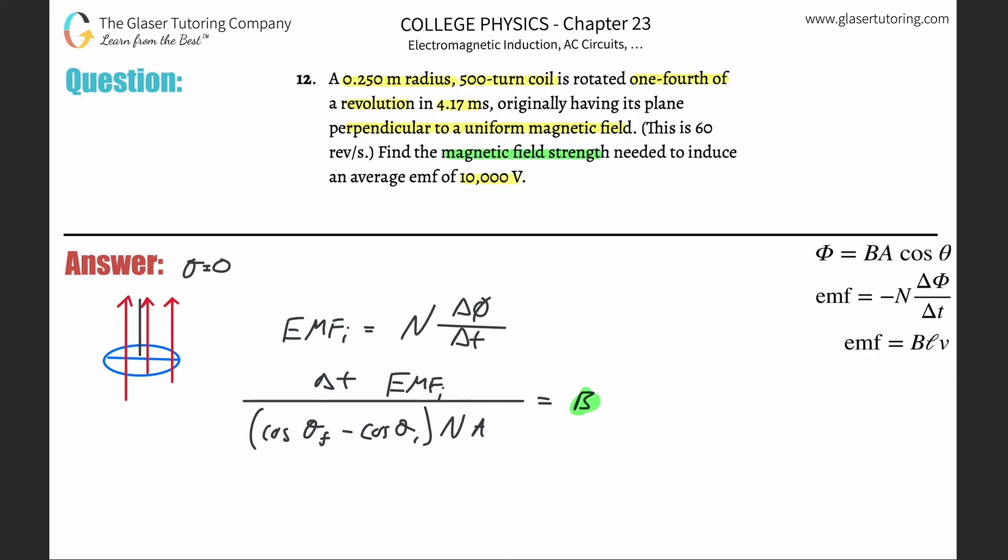All we got to do is now plug in. The time - 4.17 milliseconds - we need that in seconds so that's 0.00417 or you could just do 4.17 times 10 to the minus third. The induced emf they said ten thousand volts so you plug that in. Divided by now the cosine of the final - so it says it's rotated one fourth of a revolution.